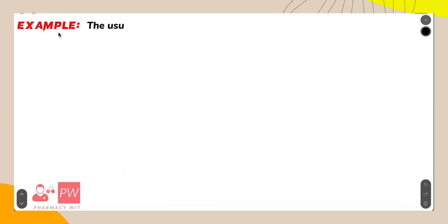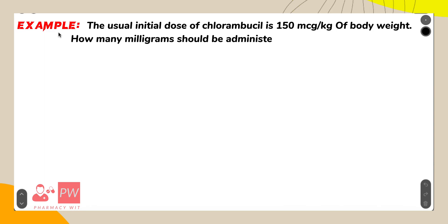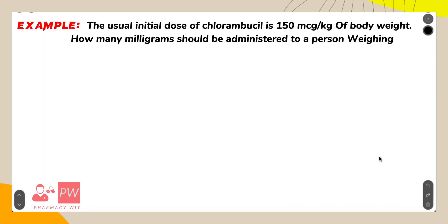The next example: the usual initial dose of chlorambucil is 150 mcg (micrograms) per kg of body weight. How many milligrams should be administered to a person weighing about 154 pounds? Before solving the question, first write down the formula.